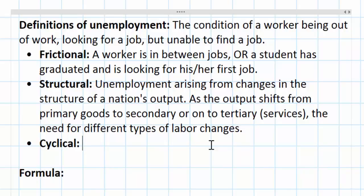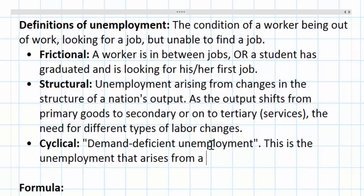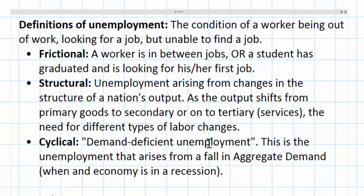The third type of unemployment is called cyclical. This is the least desirable and the most harmful type of unemployment that a country could experience. We refer to cyclical unemployment as demand-deficient unemployment. In other words, this is the unemployment that arises from a fall in aggregate demand. When an economy is in a recession, cyclical unemployment exists. Clearly the words recession and demand-deficient imply that an economy is not doing well. We'll graph the different types of unemployment using an AD-AS model in just a moment, but first let's talk about the formula.